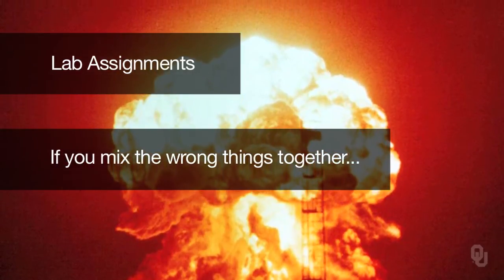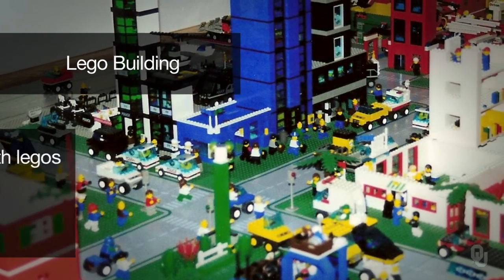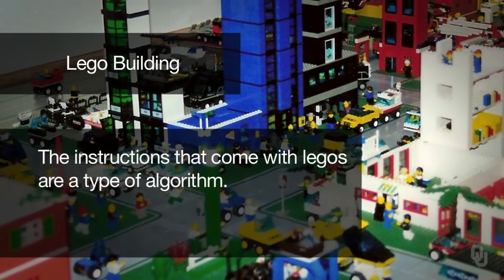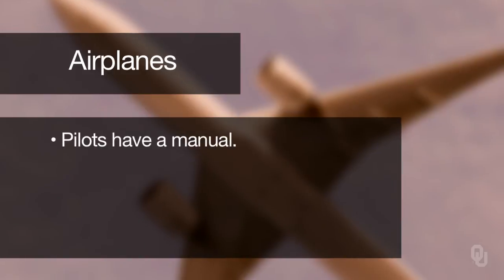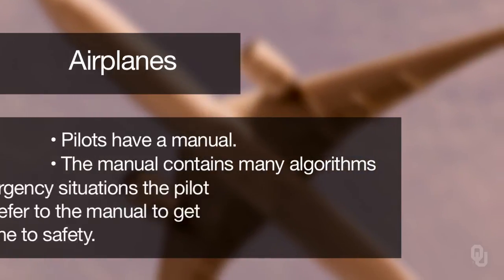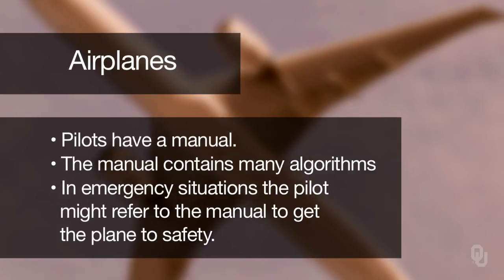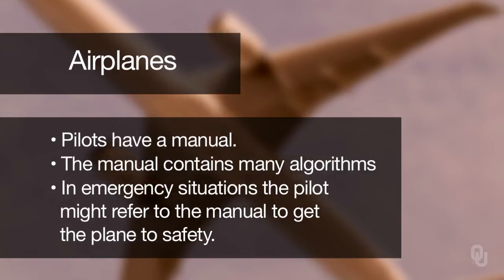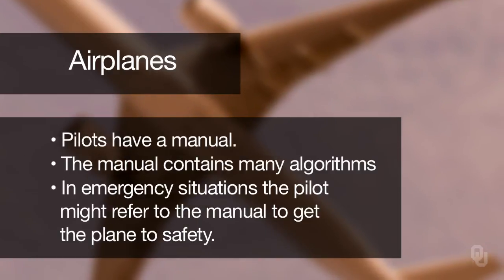Another example from the real world: if you've ever built any Lego sets, Lego sets come with instruction sets, and those instruction sets are examples of algorithms. If you've ever been on a plane, the pilots have a manual, and that manual has a lot of interesting algorithms in it — particularly what happens in an emergency. They can flip to that page and follow a set of steps calmly, and that's another example of an algorithm.